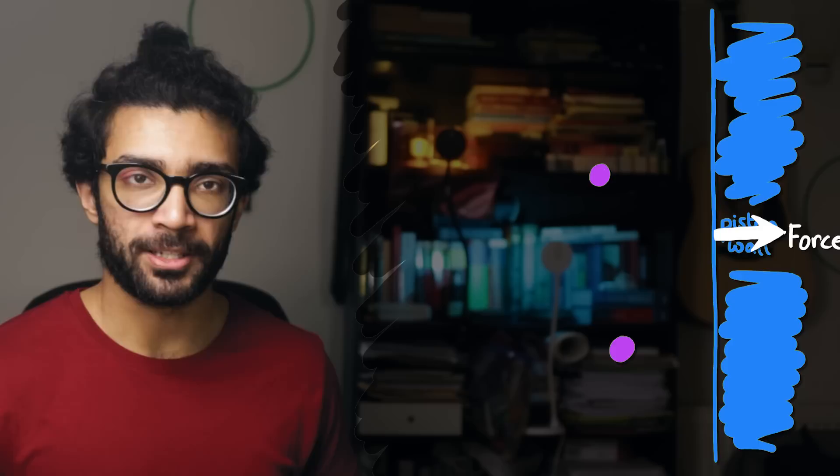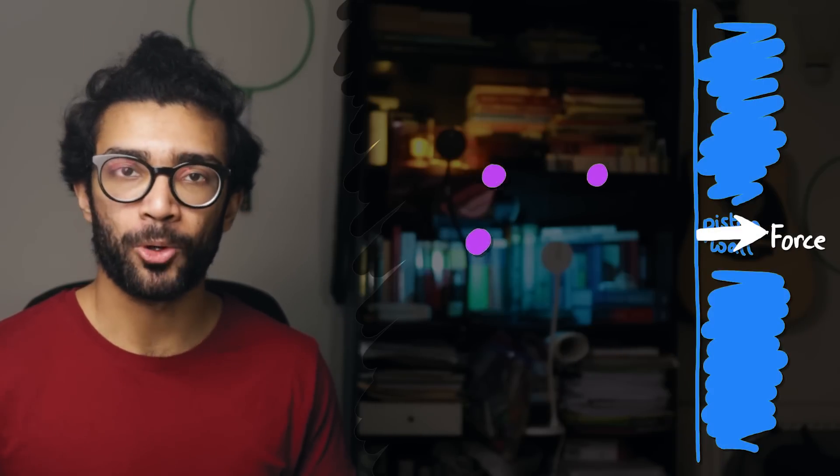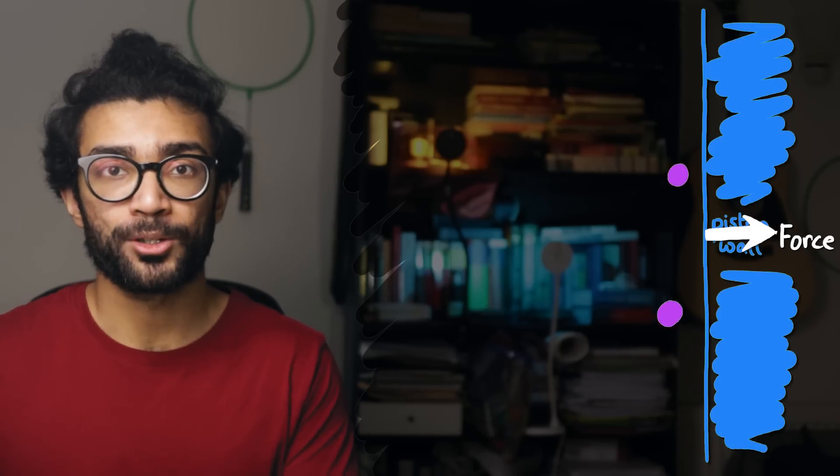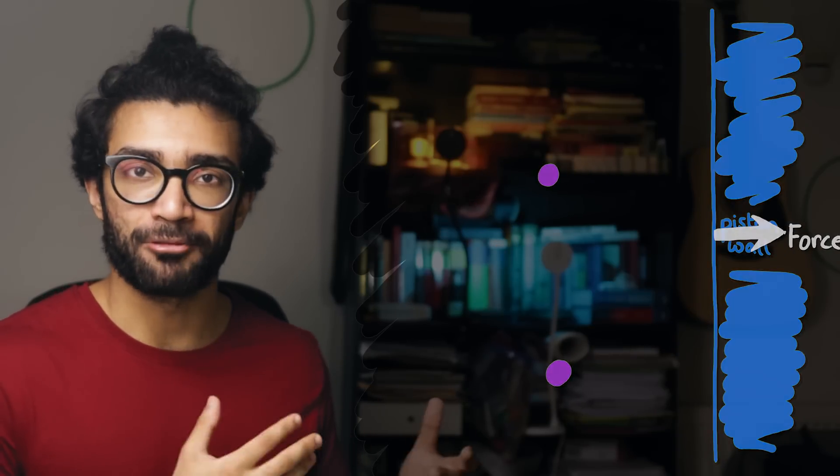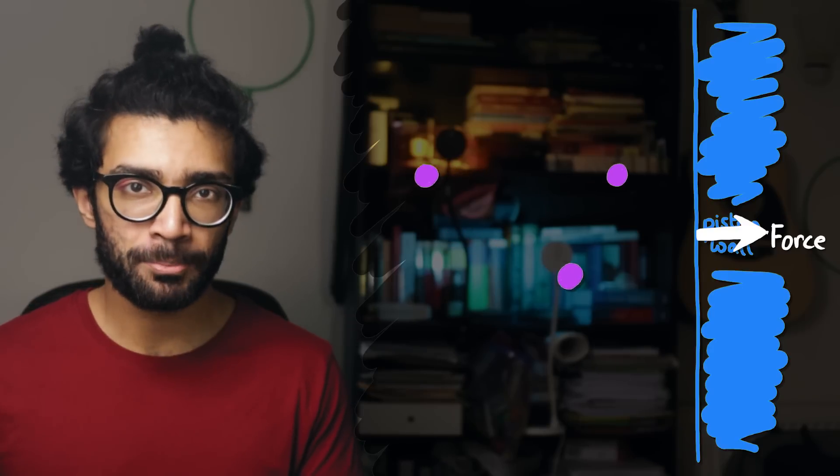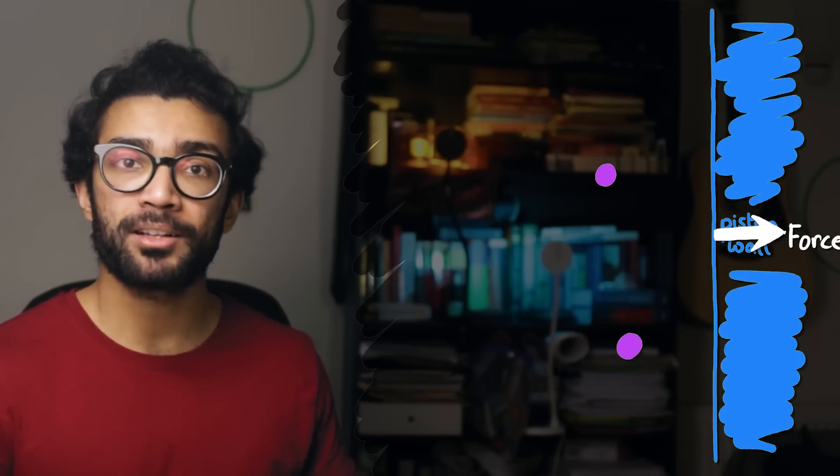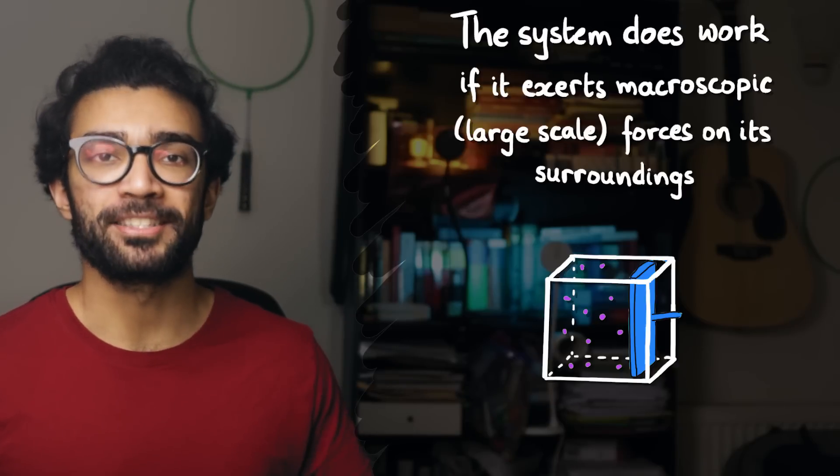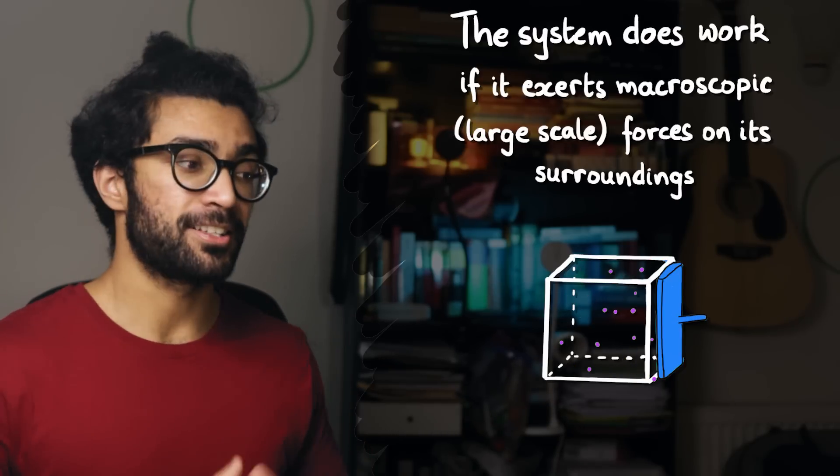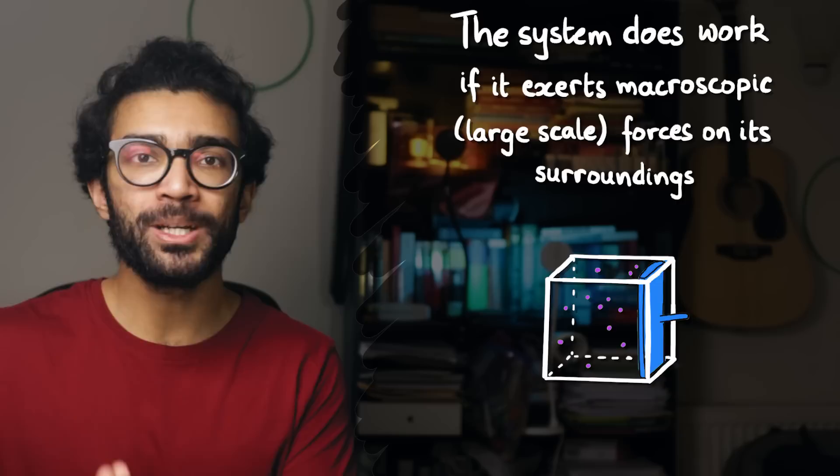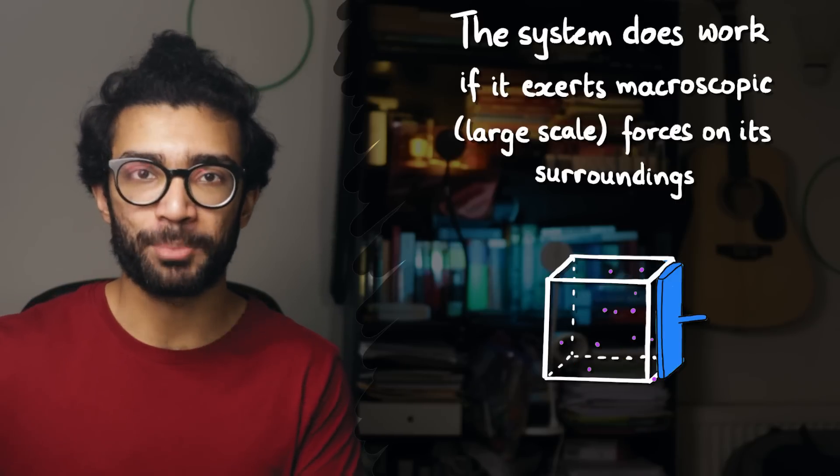Because any particle colliding with our piston wall, whether it be head-on or at an angle, will exert a force on our piston wall, in this particular case to the right. All of those forces will add up, resulting in a macroscopic or large-scale force on the piston to the right. This macroscopic force ends up pushing the piston to the right as we'd expect. And because of this, we say that our system, our gas, is doing work on its surroundings. In this case, the piston.